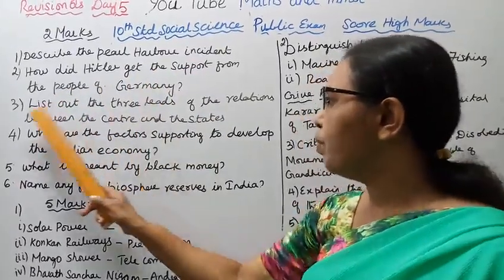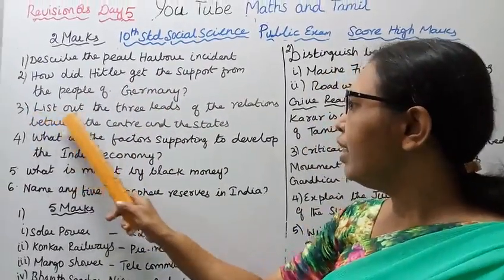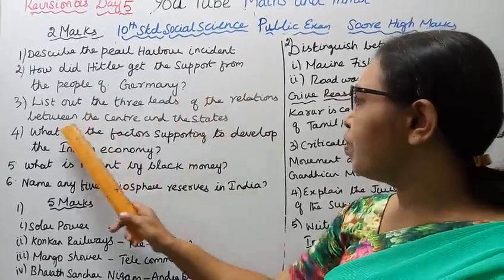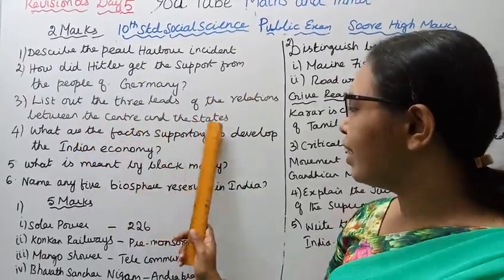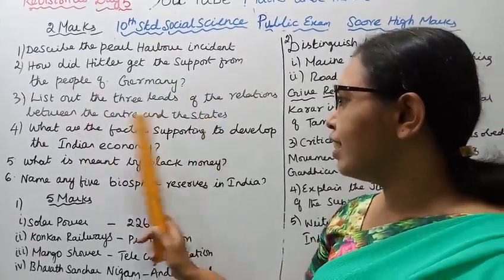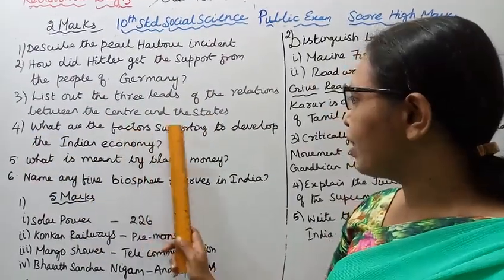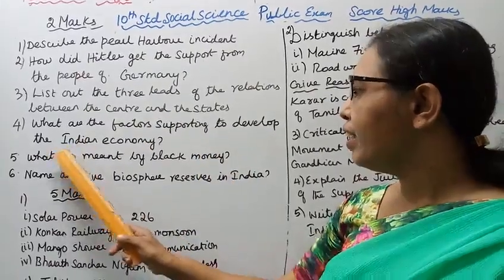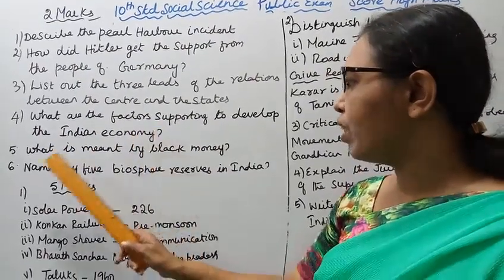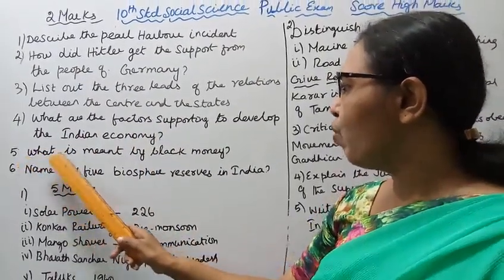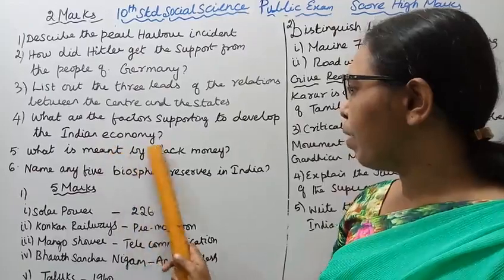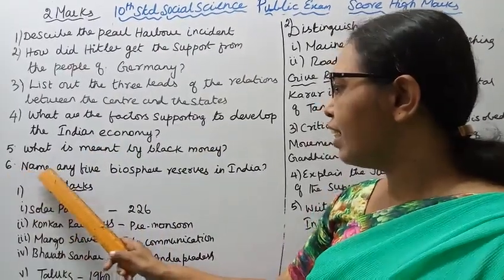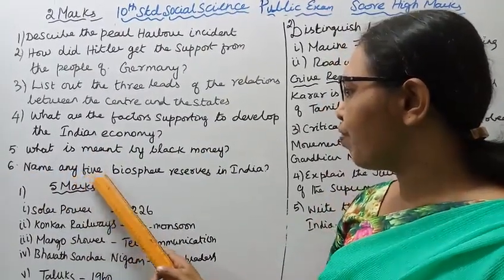Third, list out three leads of the relations between the center and the states. Fourth, what are the factors supporting the development of the Indian economy? Fifth, what is meant by black money?